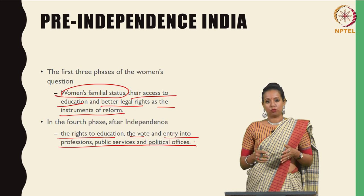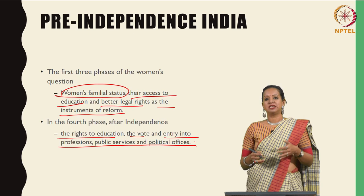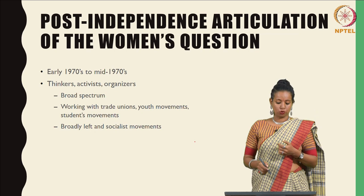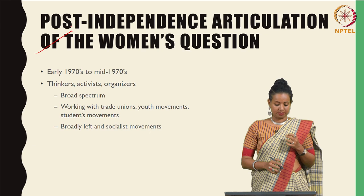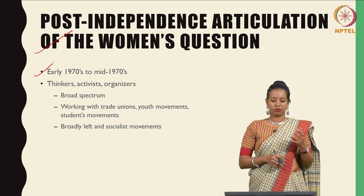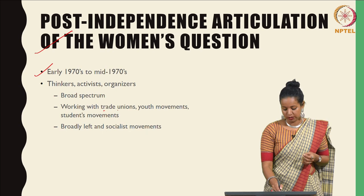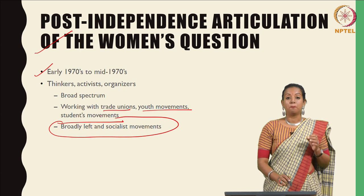Literature, writings about women, and feminist thought all lay quite dormant for the first 20 years after India's independence. In Professor Kalpana's lecture, you were given a window into a post-independence articulation of the women's question, mainly in the early to mid 1970s, where you saw the rise of thinkers, activists, and organizers across a broad spectrum — working with trade unions, youth movements, and student movements — but politically broadly left and socialist.